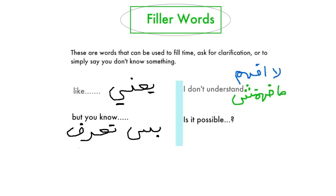Another useful expression is 'is it possible?' For instance, if you want to say, 'Is it possible to repeat the question?' — mumkin — mumkin means 'is it possible.' If you want to ask, 'Is it possible to repeat?' it would be 'mumkin ta'eed?' And if you want to say, 'Is it possible to tell me the question again?' you would say, 'mumkin ta'ulli l-su'al marran thaniya?'